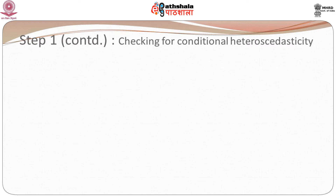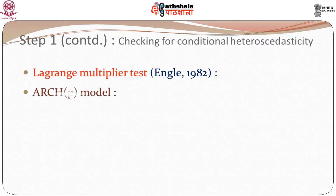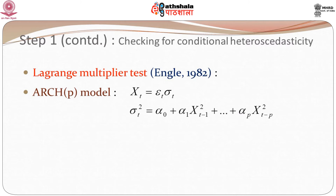If there is non-stationarity in the variance of x_t, then we need to fit an appropriate volatility model, and the simplest of them would be the ARCH model. Suppose we have estimated mu_t and eliminated it — now instead of y_t we have x_t. We need to check whether there is heteroscedasticity in x_t. This is done through what is referred to as the Lagrange multiplier test, proposed by Engle in 1982 when he actually proposed the ARCH model. We have an ARCH model: x_t equals epsilon_t times sigma_t, and sigma_t squared is dependent on its past values. You can replace the sigma_t's by x_t squared as well.